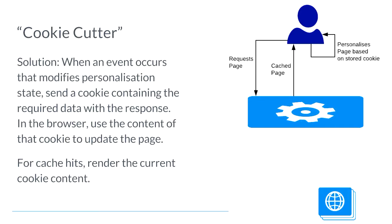We came up with a technique called cookie cutter, where essentially we are punching a hole into a cached page to insert content from a cookie. Whenever one of these events occurs that changes our personalisation state, we record the new state in a cookie and send it with that response — which can't be cached. Then we have some JavaScript at the top of the page that inserts that into the page and makes it look like the page was always served that way.